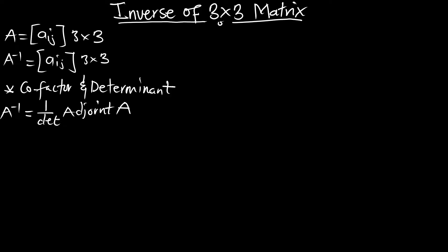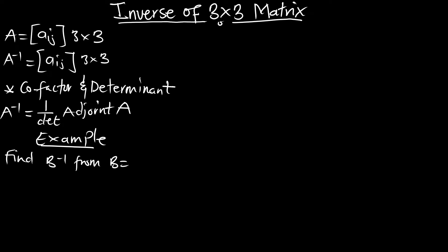Let's try an example where we have to find the inverse of a 3x3 matrix. Find B inverse from the matrix B, which is a 3x3 matrix, in the form: 2, 1, 0 and 1, -1, 1 and 3, 2, 1.